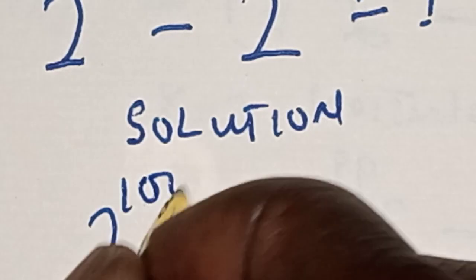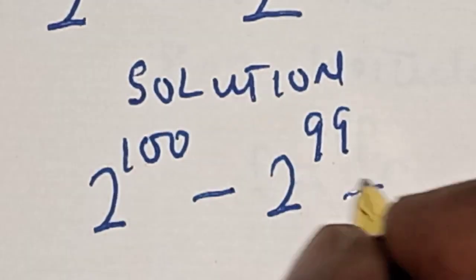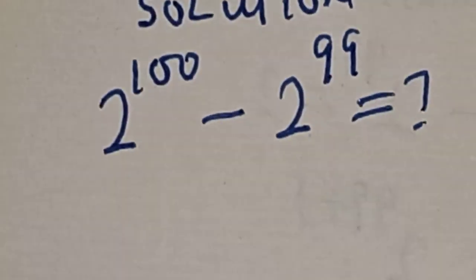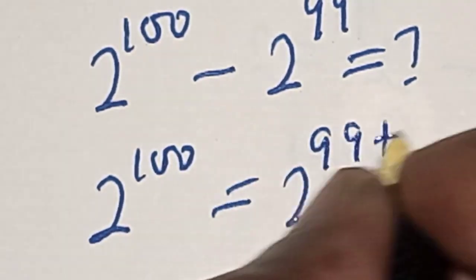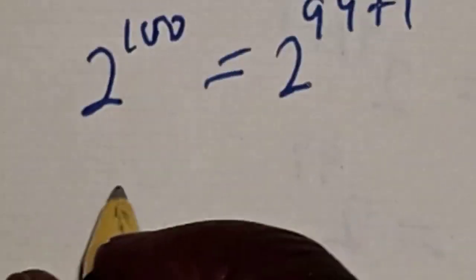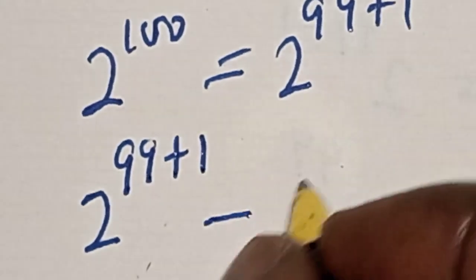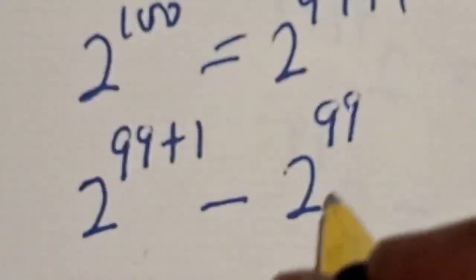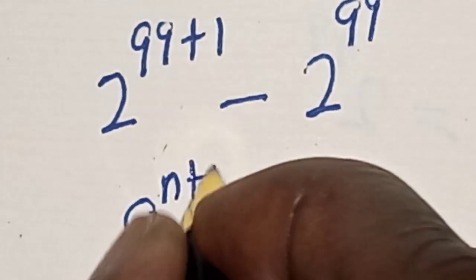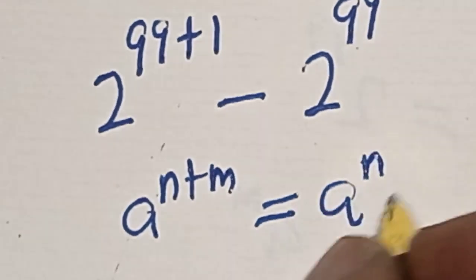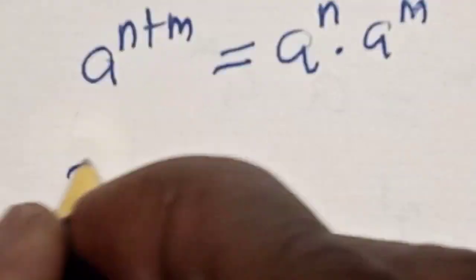2 raised to power 100 minus 2 raised to power 99 is equal to what. Let's see — 2 raised to power 100 is equal to 2 raised to power 99 plus 1. Let's substitute: 2 raised to power 99 plus 1, minus 2 raised to power 99. Remember this rule: a raised to power n plus m is equal to a raised to power n multiplied by a raised to power m.